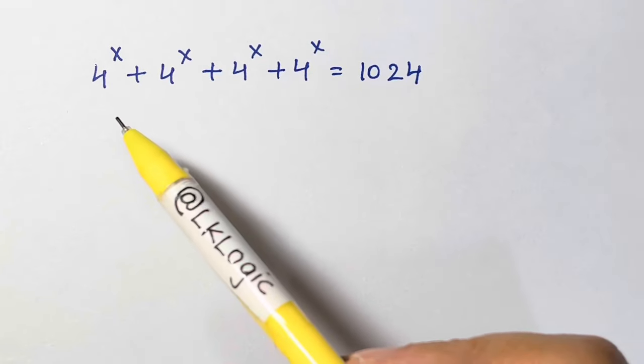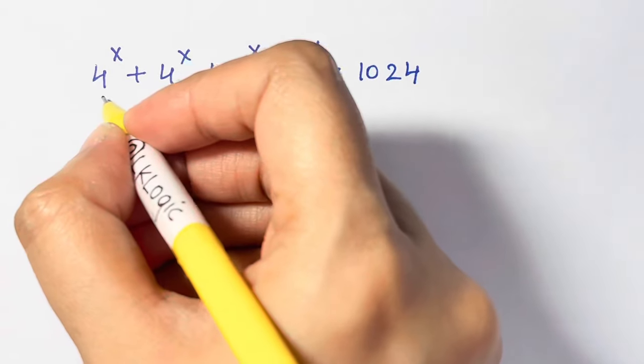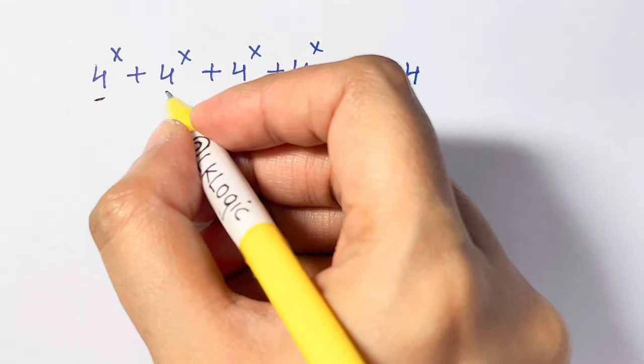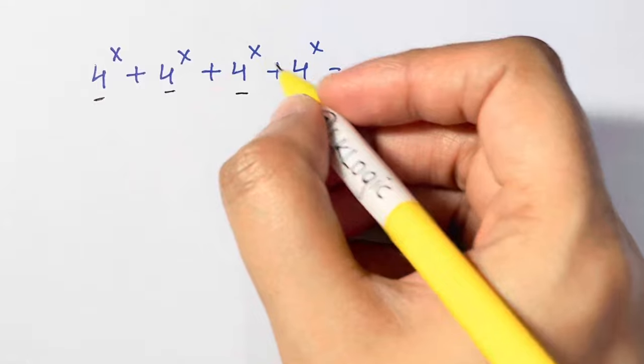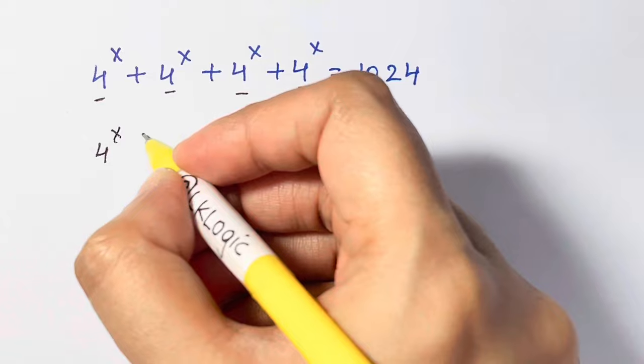Hi everyone, here I have a nice exponential equation. Let's solve this. What I'm going to do is, every time I have 4 to the power of x, 4 raised to x, I'm going to take it out common. 4 to the power of x.